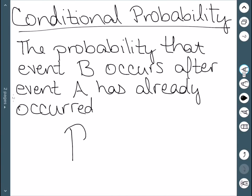This is denoted by the probability of B, given (which we represent by this bar) A.